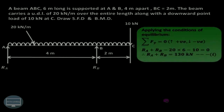We'll apply the conditions of equilibrium, that is summation of Fy is equal to zero. Upward forces are considered as positive and downward forces are considered as negative. RA and RB are both acting in the upward direction. The UDL is 20 kN per meter over 6 meters, giving a total UDL load of 120 kN, and the point load is 10 kN. Therefore RA plus RB equals 130 kN.